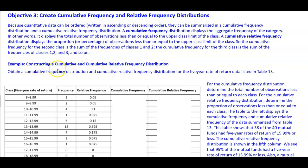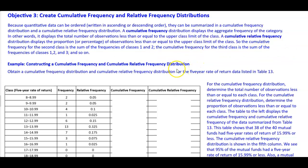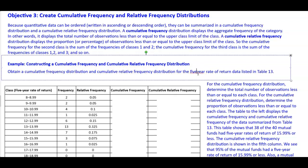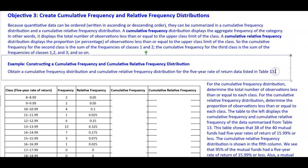For example, we're going to be constructing a cumulative and cumulative relative frequency distribution. We're going to obtain a cumulative frequency distribution and cumulative relative frequency distribution for the five-year rate of return data listed in the table.